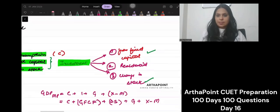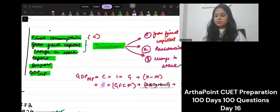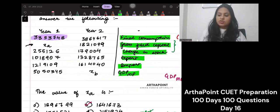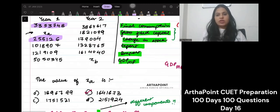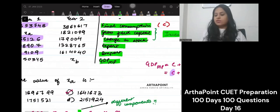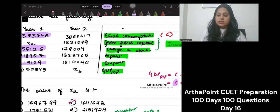Now it's simple. You are given C. Right? You are given the value of C. What is the value of C that you are given? Well, you are given C as this much. You can put this C here. This is XA. Then you are given change in stock. You are given change in stock as this much. We will put it here. G is zero. G is not given. Export you are given. Import you are given. So G ko hum zero put kar denge. Export I will put here and import I will put here. And then I will find the value of XA.